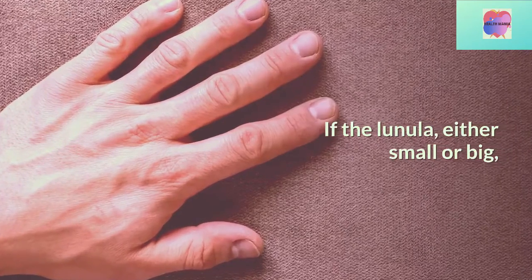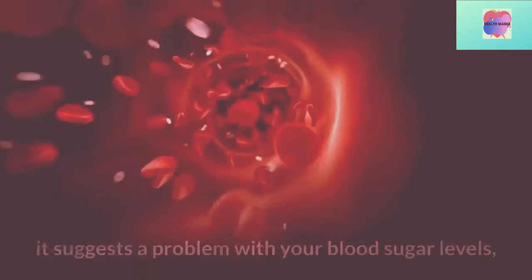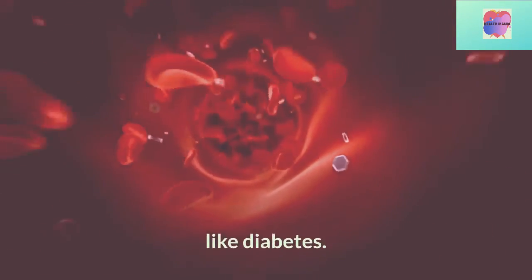If the lunula, either small or big, is isolated from the rest of the nail by a transversal line, it suggests a problem with your blood sugar levels, like diabetes.